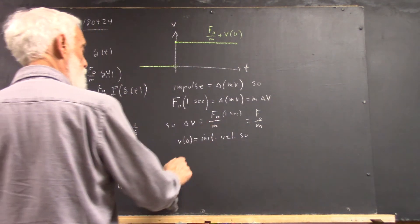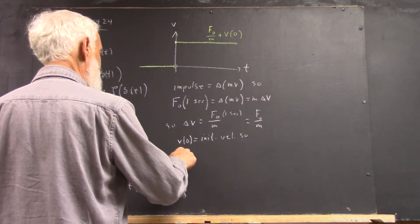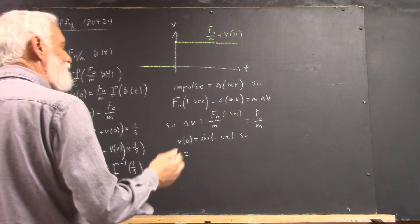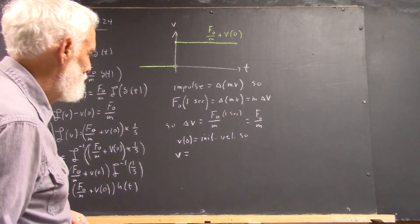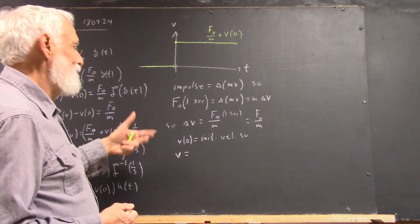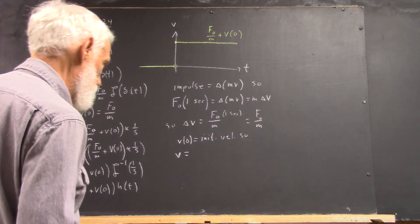V of 0 is your initial velocity. Waving my hands a little bit here because there's some simultaneity involved in the v of 0 and the impulse. Not going to worry about that.